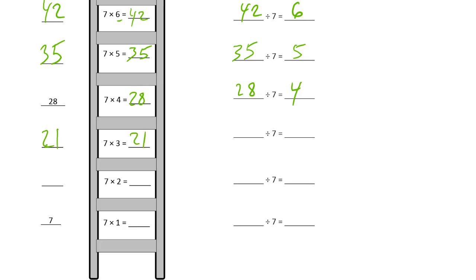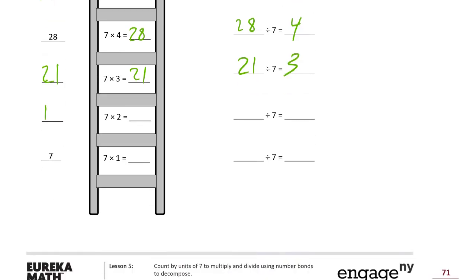21, 3. This is 14. 7 times 2 is 14. 14 divided by 7 is 2. 7, 7 times 1 is 7. 7 divided by 7 is 1.